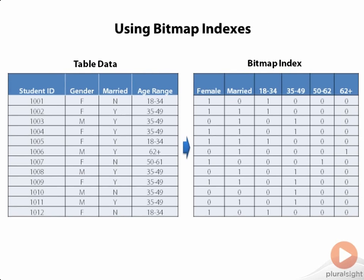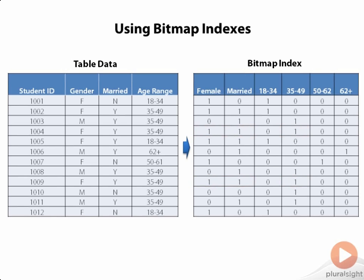The real power of bitmap indexes comes when we can join several bitmap indexes together. Conducting bitwise logical operations between different bit arrays is very efficient. So while none of our columns individually has a lot of uniqueness, by having a bitmap index on each column and then conducting a logical AND operation, we can very easily answer questions like finding all the females who are married and in the age range of 35 to 49 — a typical demographic question. And this is where bitmap indexes really shine; a standard B-tree index just isn't a very good fit for this problem.